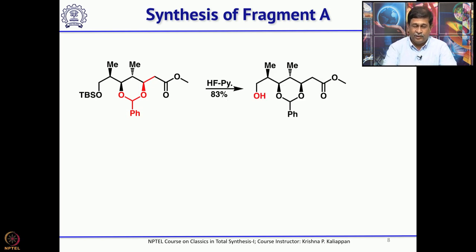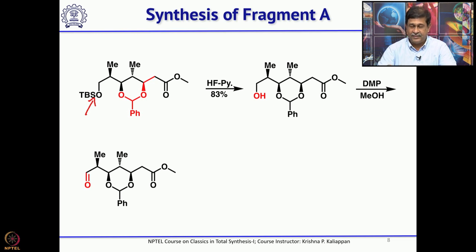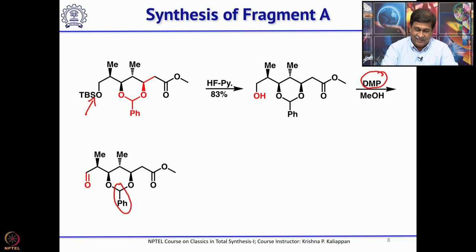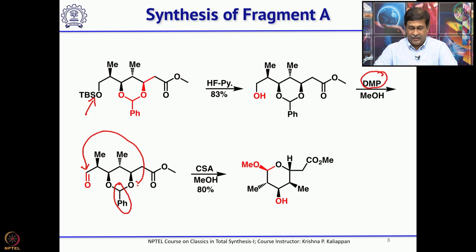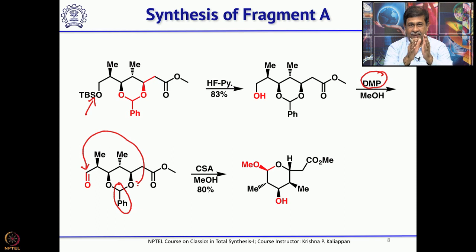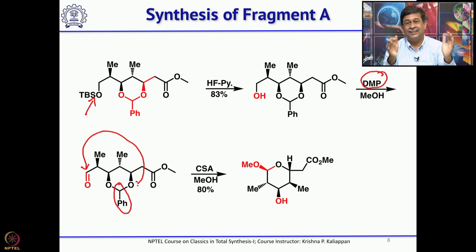The TBS group was removed with HF-pyridine, then Dess-Martin periodinane gave the primary aldehyde. To form the six-membered ring, the benzaldehyde acetal was first cleaved, and then the hydroxyl group attacks the aldehyde to form the six-membered ring. That was done in one step by treating with camphorsulfonic acid and methanol — camphorsulfonic acid removes the benzaldehyde acetal, releasing the two hydroxyl groups, and one hydroxyl immediately attacks the aldehyde to form the six-membered ring.